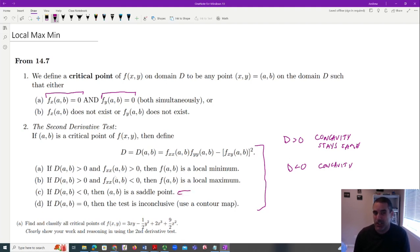If the concavity doesn't change, then we need to look at one of these. It doesn't matter which one and see if it's positive or negative. If it's positive, it's concave up. If it's negative, it's concave down, which means the main. So that was that first part. This is one major topic.